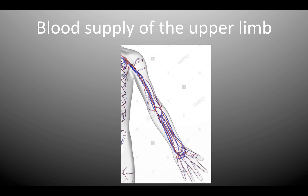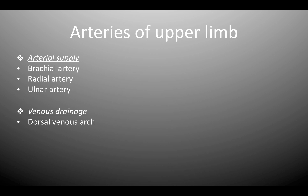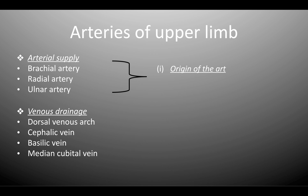Hey guys, welcome to Med School Made Easy. We'll be talking about the blood supply of the upper limb in this video. We will have a look at the brachial artery, the radial artery, and the ulnar artery under the arterial supply, as well as the venous drainage from the dorsal venous arch, the cephalic vein, the basilic vein, and the median cubital vein.